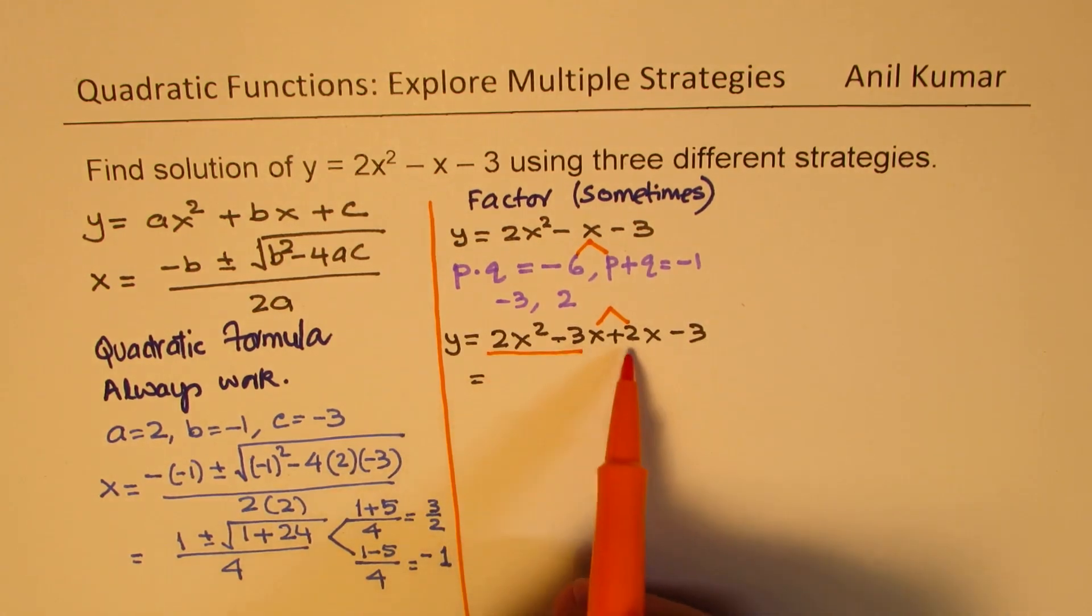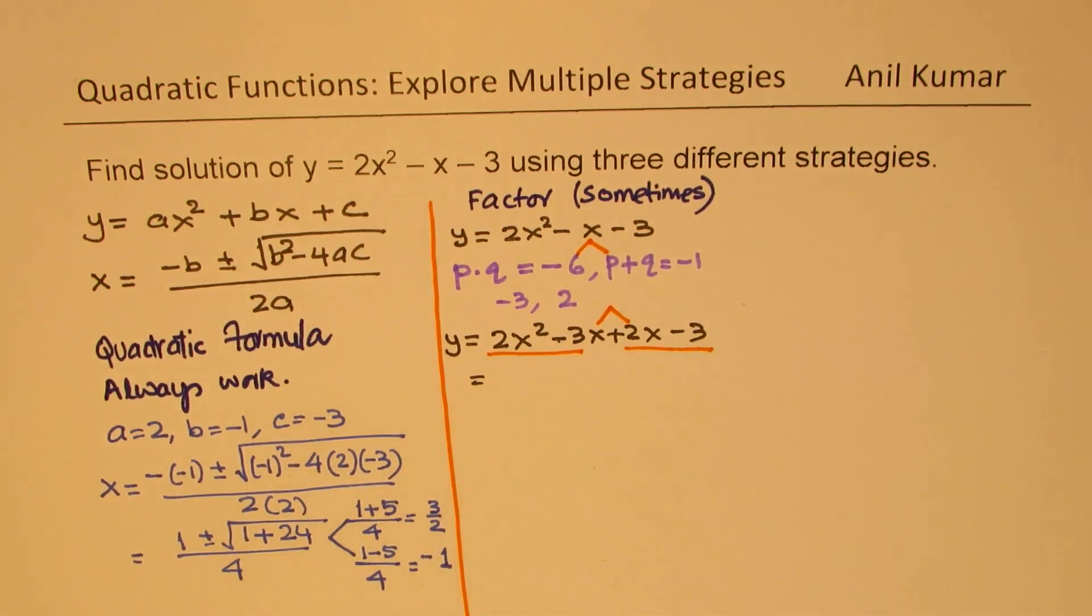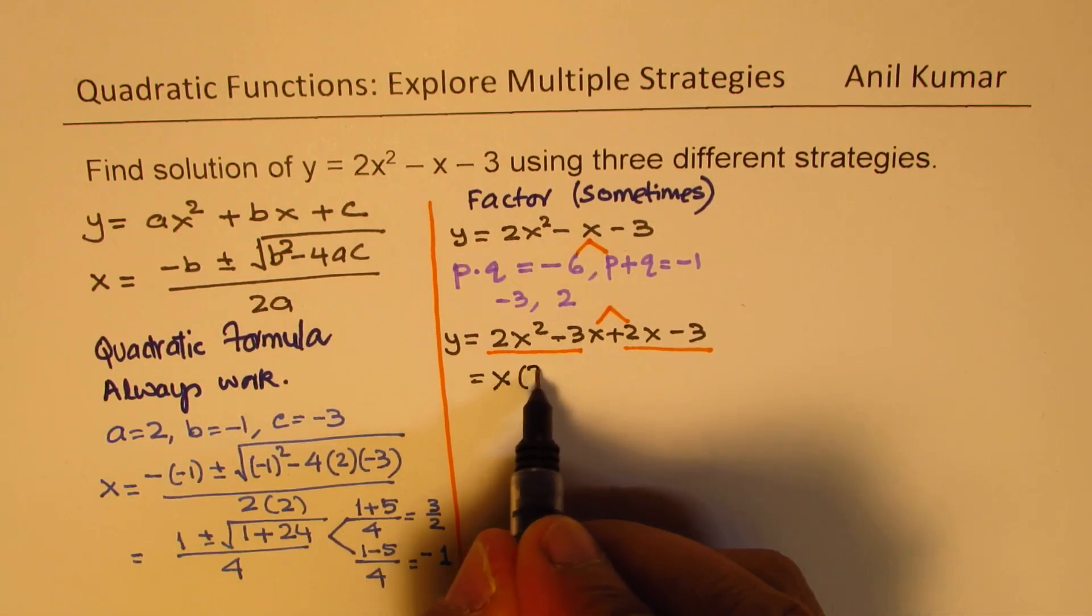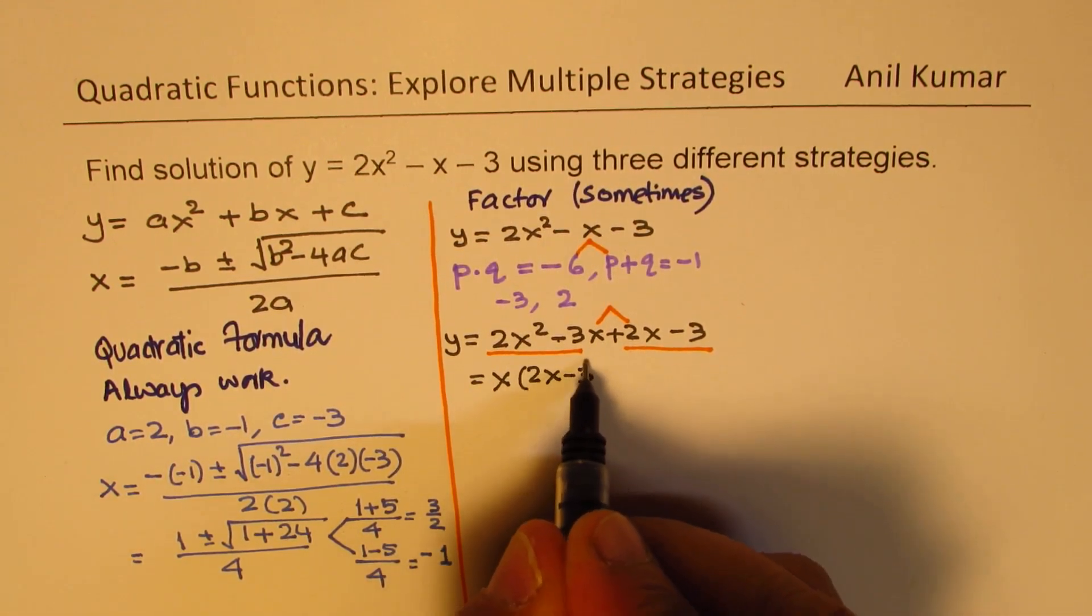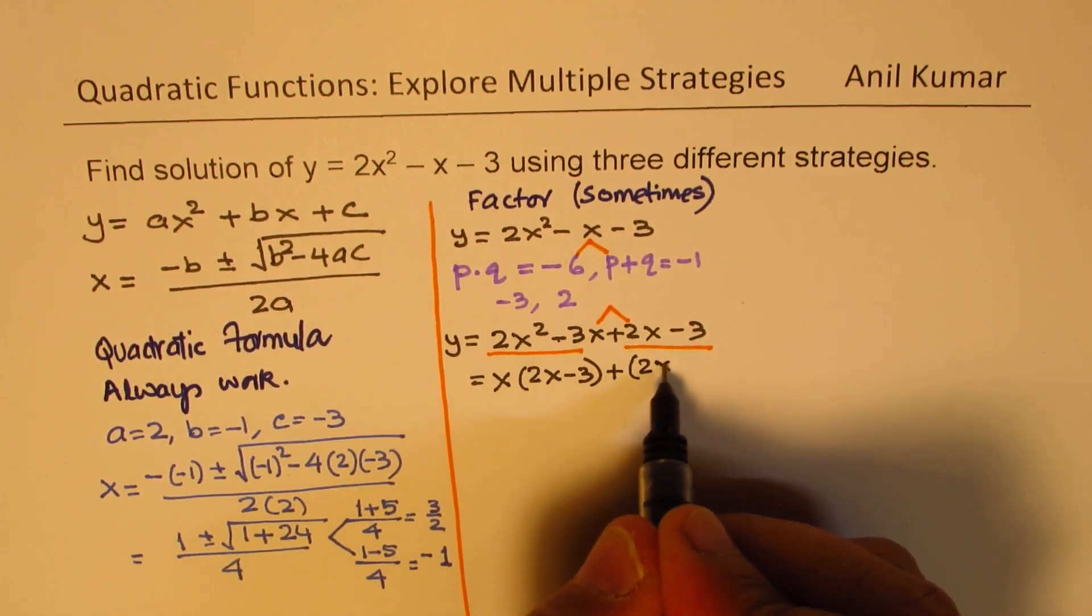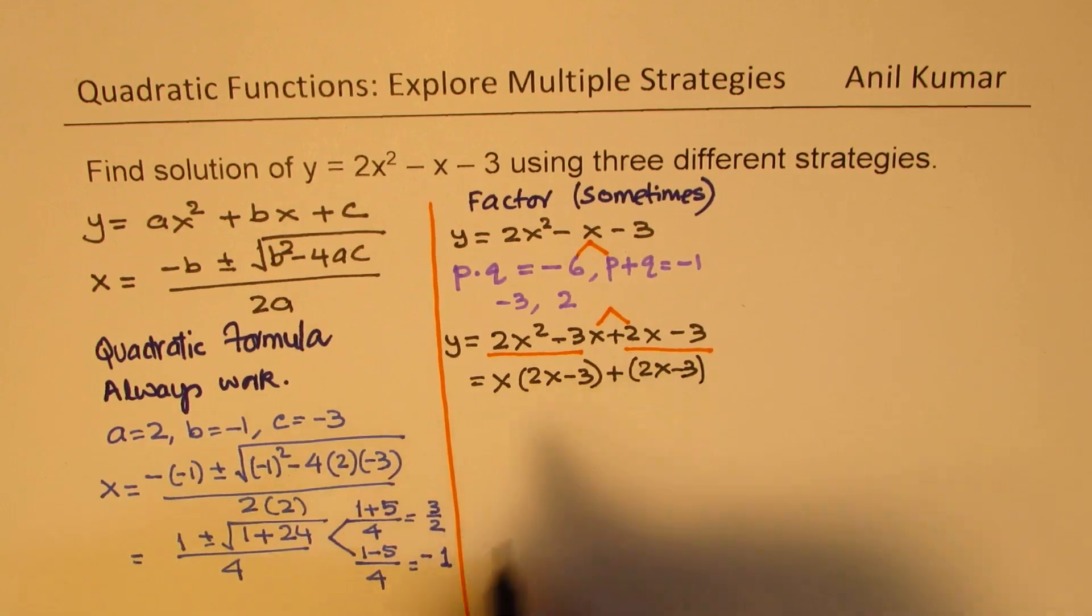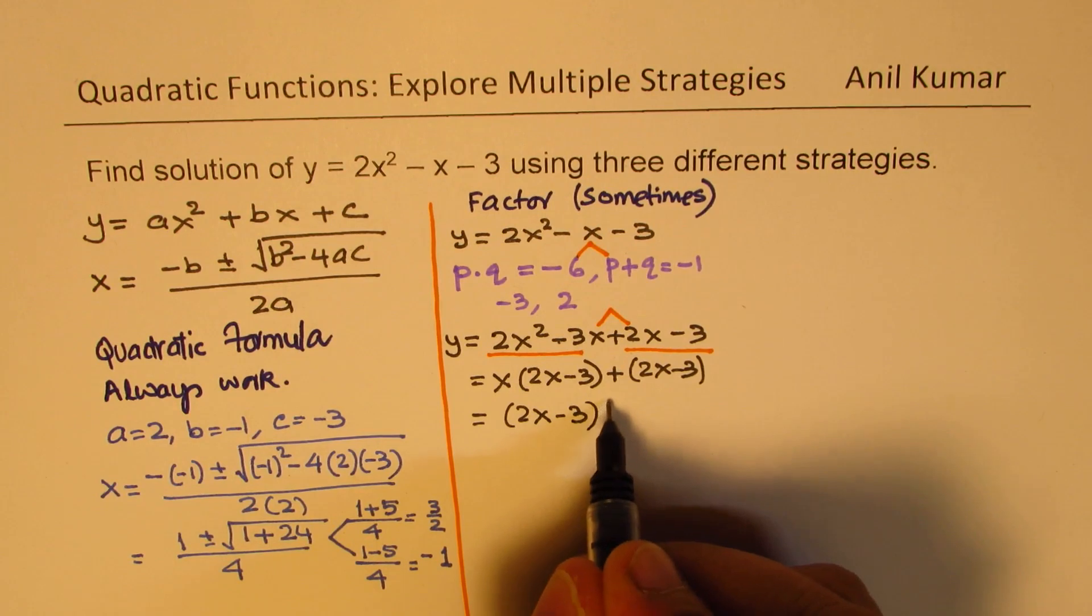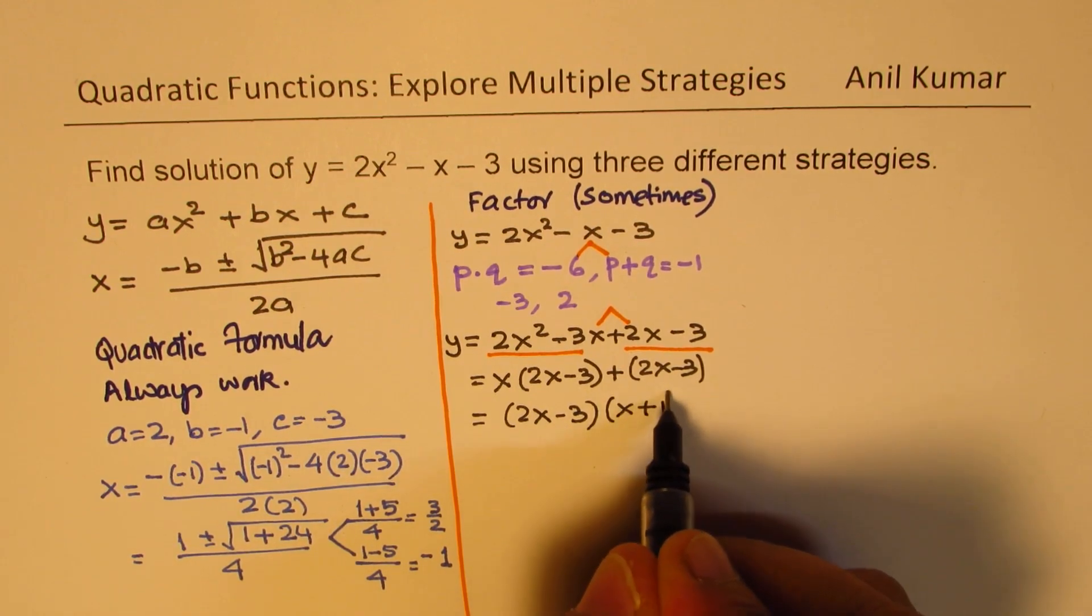So when you group them, you can take x common here. You get 2x minus 3. Nothing is common, that means 1 is common. So we get 2x minus 3. 1 is common. Now it could be written as the common factor 2x minus 3 times x plus 1.